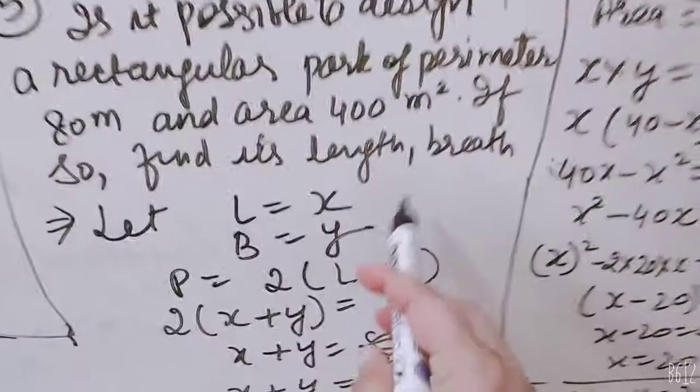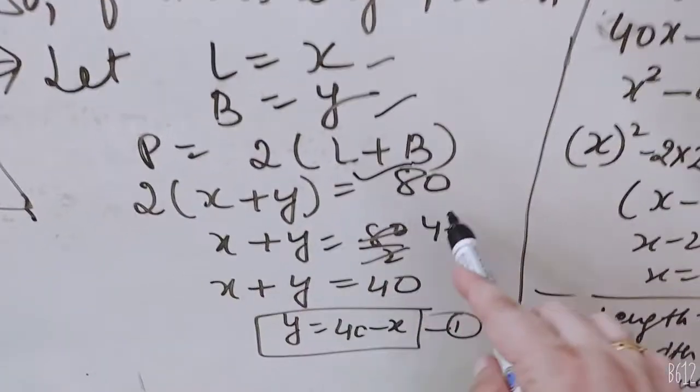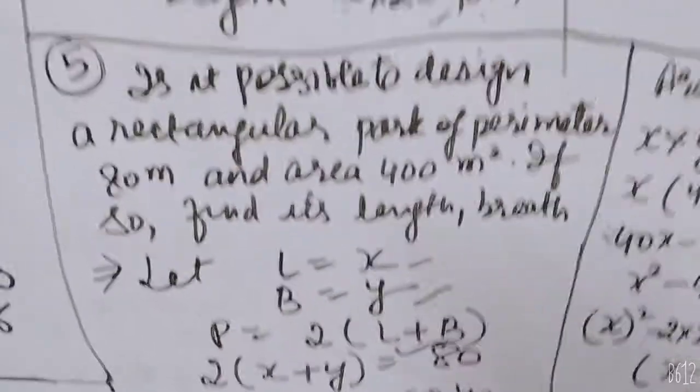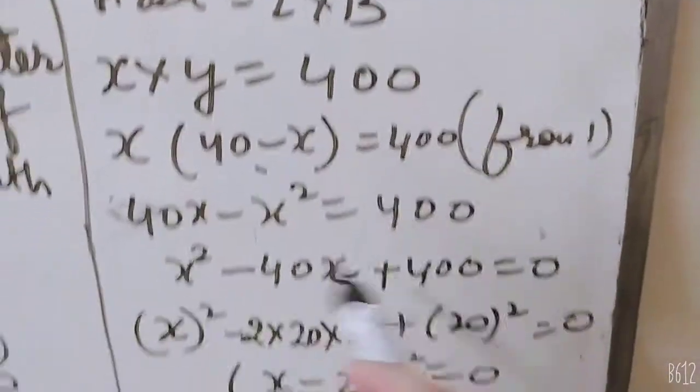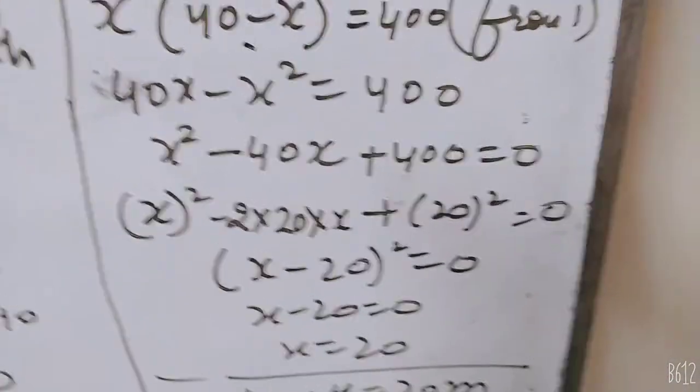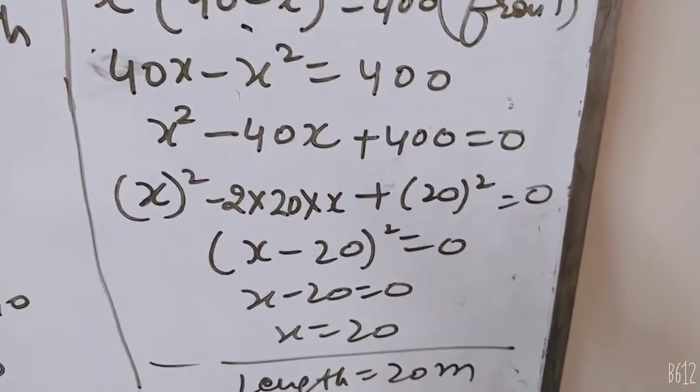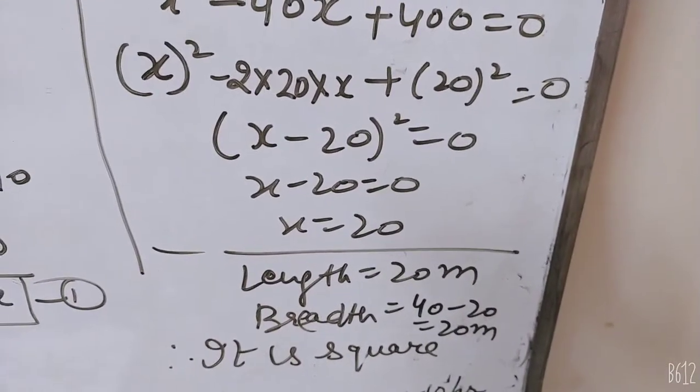Is it possible to design a rectangular park of perimeter 80 and area 400 square meters? Perimeter formula, 2(x plus y) equals 80, so x plus y equals 40. Area formula, x into y equals 400. Putting y equals 40 minus x, we get the quadratic x squared minus 40x plus 400 equals 0. Using identity, x value is 20. So length and breadth both 20. But a rectangle can't be a square, right?